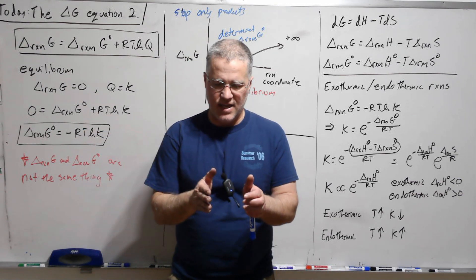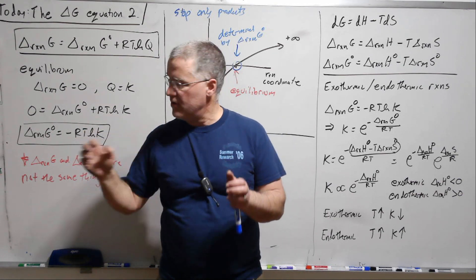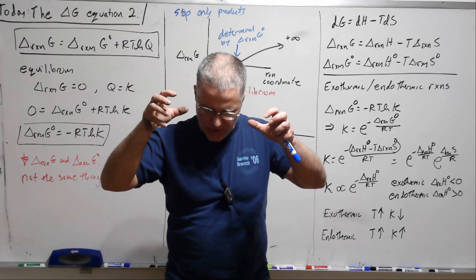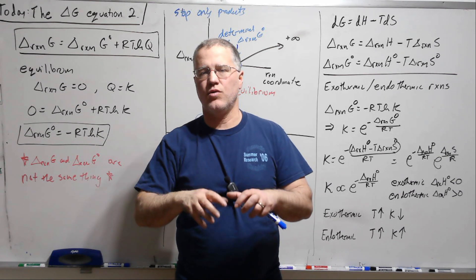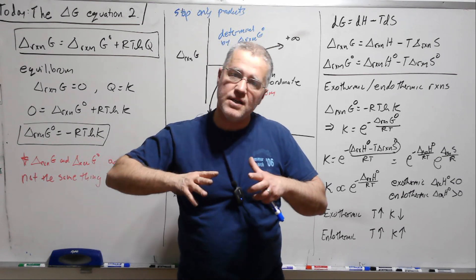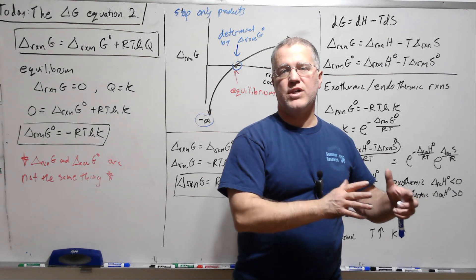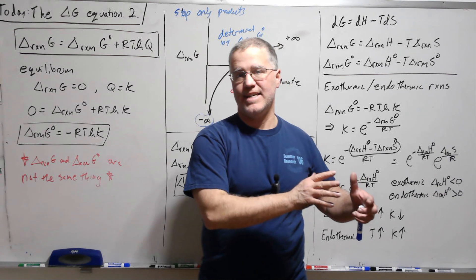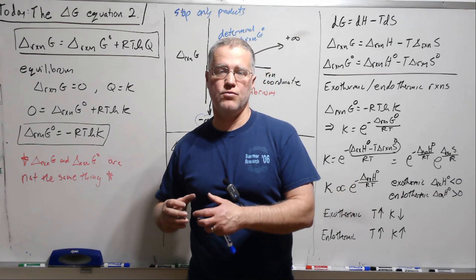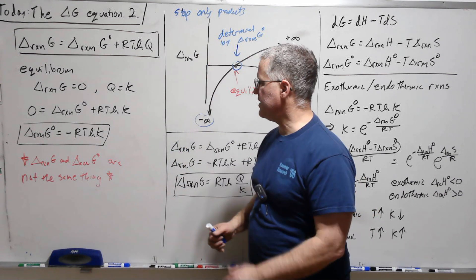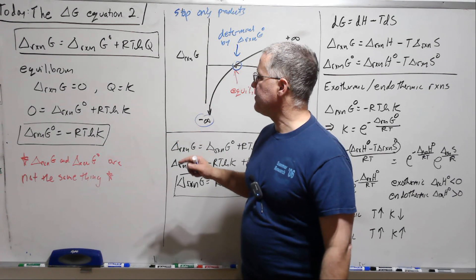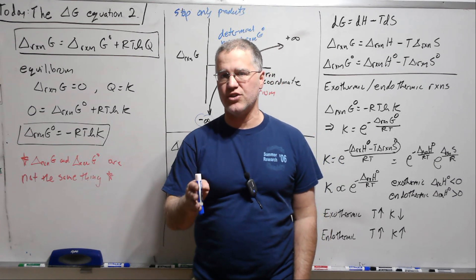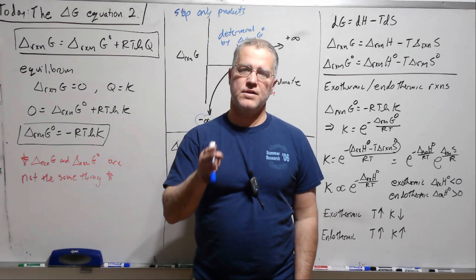Delta G is going to say, if it's negative, Delta G standard, if that's negative, then that means relative to the standard state, putting one mole of everything. So starting with one mole of everything, then are we going to move towards reactants, or towards products? That's going to be a negative Delta G. Are we going to move towards reactants? That's going to be a positive Delta G standard. So the Delta G standard tells us which direction are we going to go from the standard state.